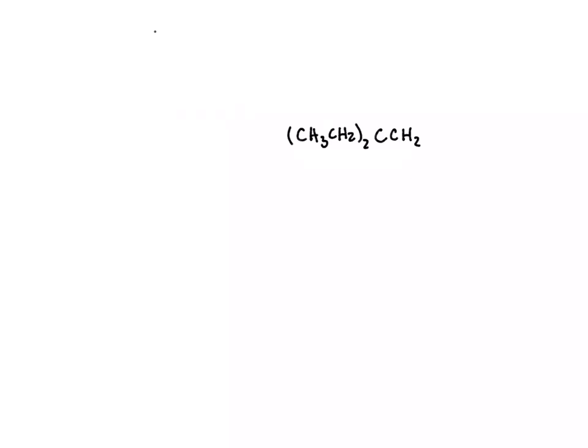So what we can do is we can start off with this carbon here in the middle, and we see that this CH2 is bound to it, and then we know carbon must have four bonds, and we see that two groups on this side are also bound to it.